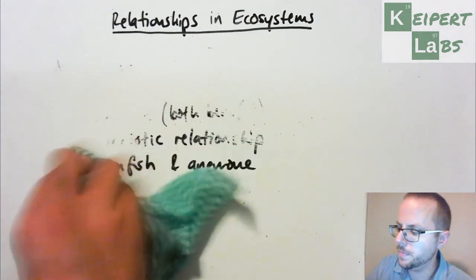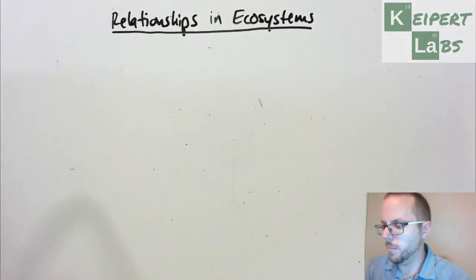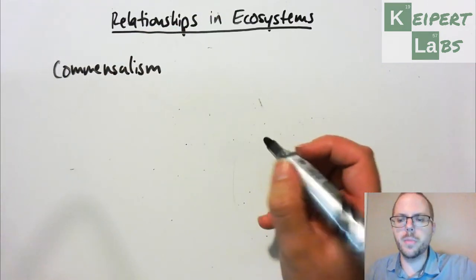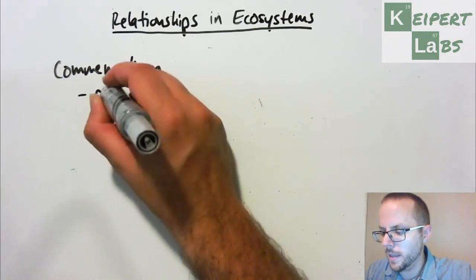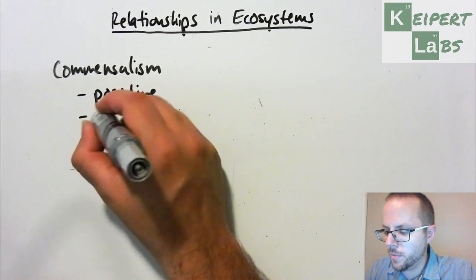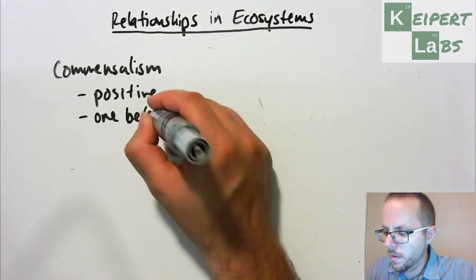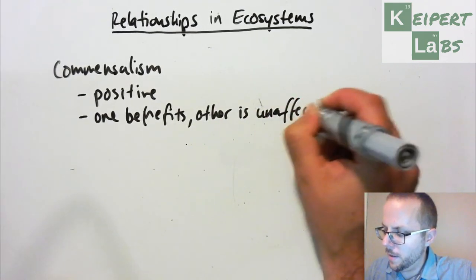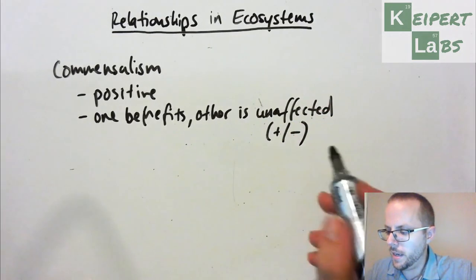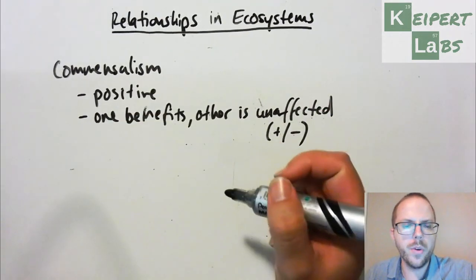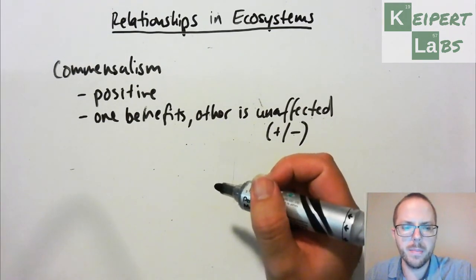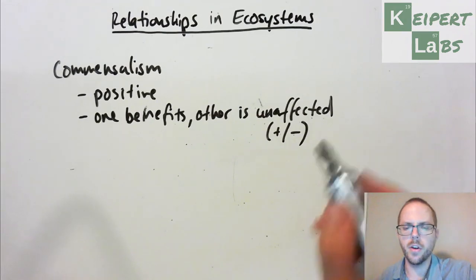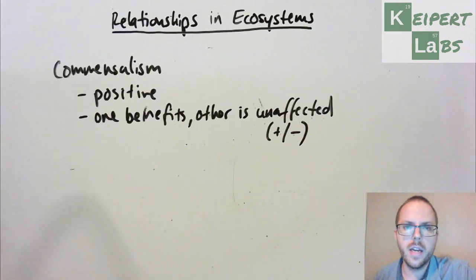Now let's have a quick look at commensalism. This is a more unfamiliar term and you can't really use the root word for much background here. But it's also an example of a positive relationship — specifically, it's where one organism benefits and the other is unaffected, good or bad. Because of this relationship, one organism benefits from the presence of the other, but the other is otherwise unaffected. It's not a negative relationship — it's not taking something away, but it's not benefiting the other either, it's just nothing.